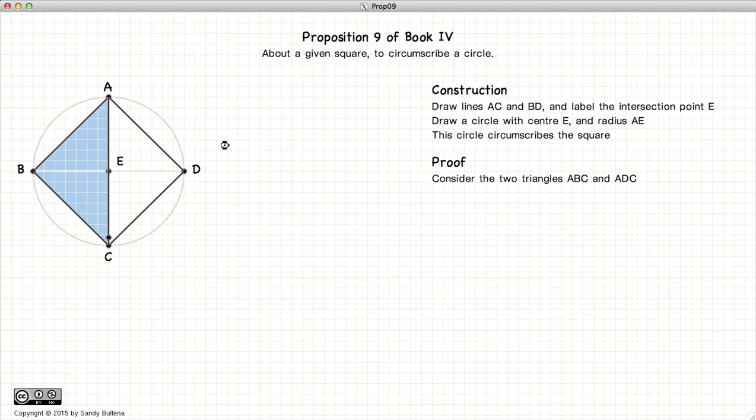To prove that this is so let's consider the two triangles ABC and ACD. Now these two triangles we have AB is equal to AD because after all this is a square. BC is equal to CD and finally AC is common to both triangles. So we have two triangles where the three sides are all equal.